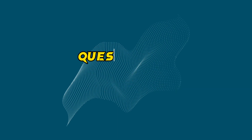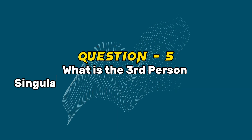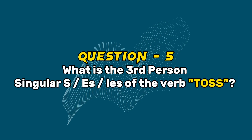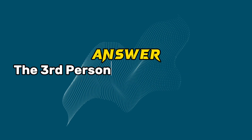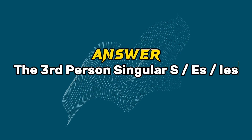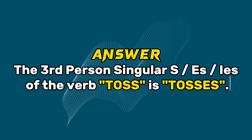Question 5: What is the third person singular form of the verb toss? Answer: The third person singular form of the verb toss is tosses.